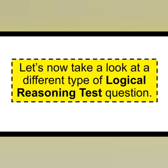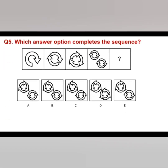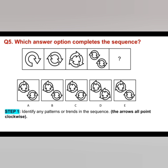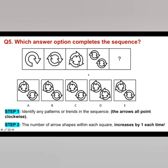Let's move on to a different type of logical reasoning test question. Question five: which answer option completes the sequence? We have a sequence across the top with rotating arrows — we have to look at each one and decide from the answer options A, B, C, D, or E which one goes in the gap. The way to answer it is to identify any pattern or trend in the sequence. I can identify a pattern where the arrows are all pointing clockwise. So any answer options going anti-clockwise I would eliminate straight away. Step two: the number of arrow shapes within each square increases by one each time.